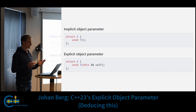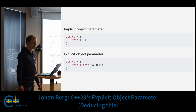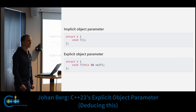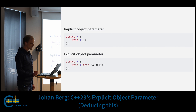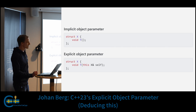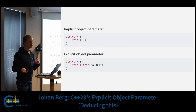We prefix the first parameter with the 'this' keyword, followed by the name of the class — which is X in this case — and give it a name. I've chosen the name 'self' here by convention; it's what's used by other programming languages such as Python and Rust. As you can see, we're taking self by reference here, but we could have taken it by const reference or rvalue reference for example.